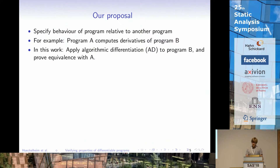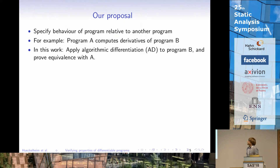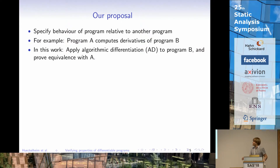One thing the project that funds me has been doing is to try to specify what a program is supposed to do only relative to another program — for example, comparing a program before some performance optimization to the same program after. Even without knowing exactly what the program does, at least it's supposed to do the same thing as before. In this particular work we take it a step further: in some cases we don't know what a program is doing, but we know that some other program is supposed to compute the derivative of that original program. We have plenty of examples for this.